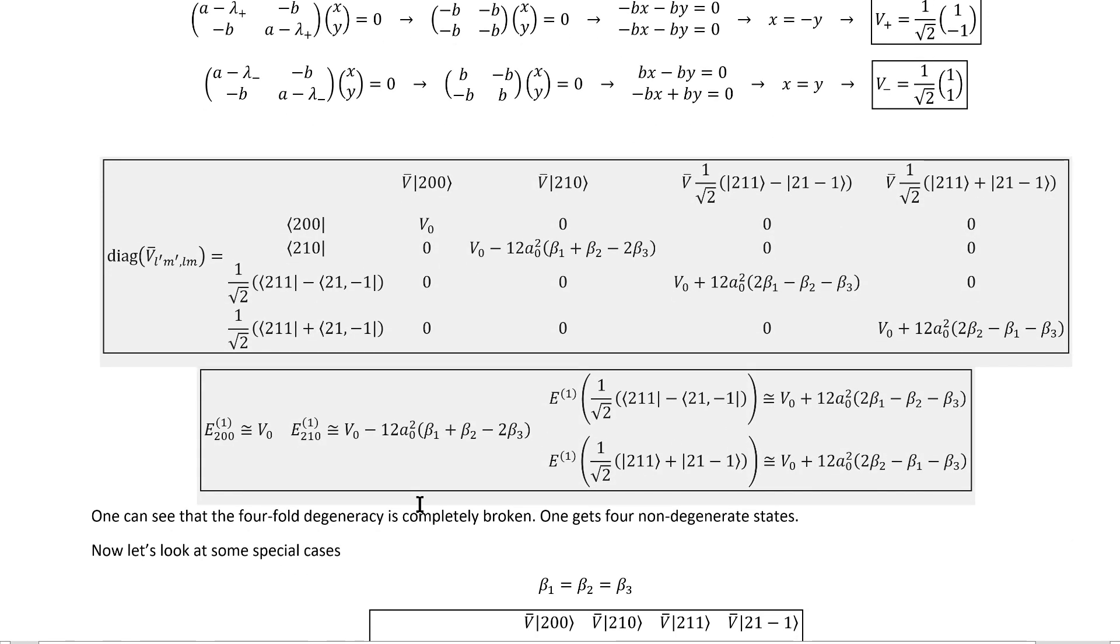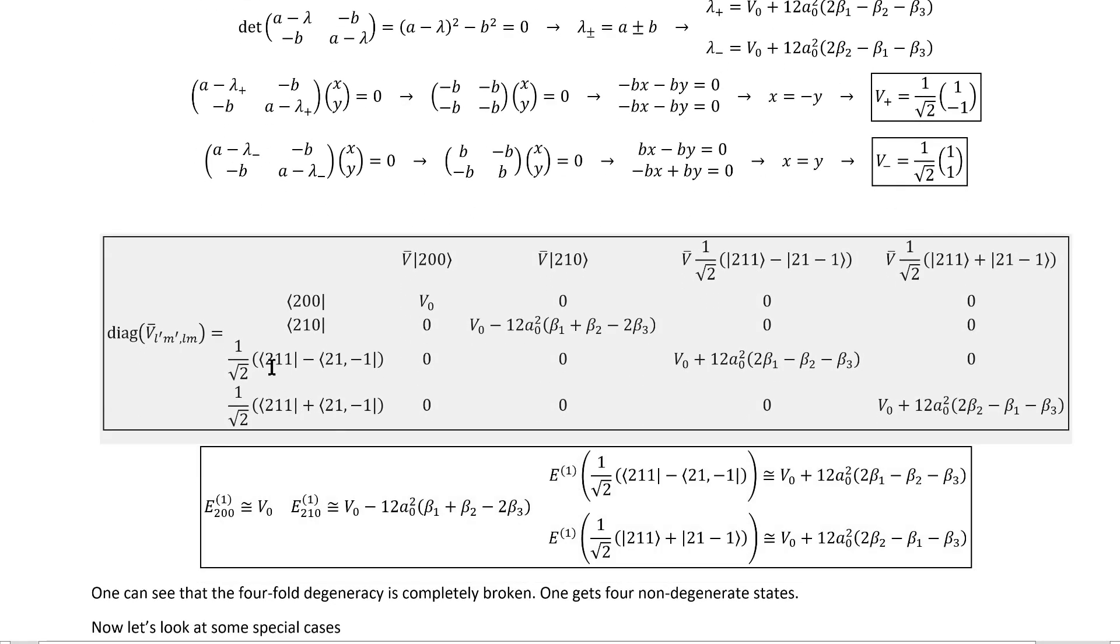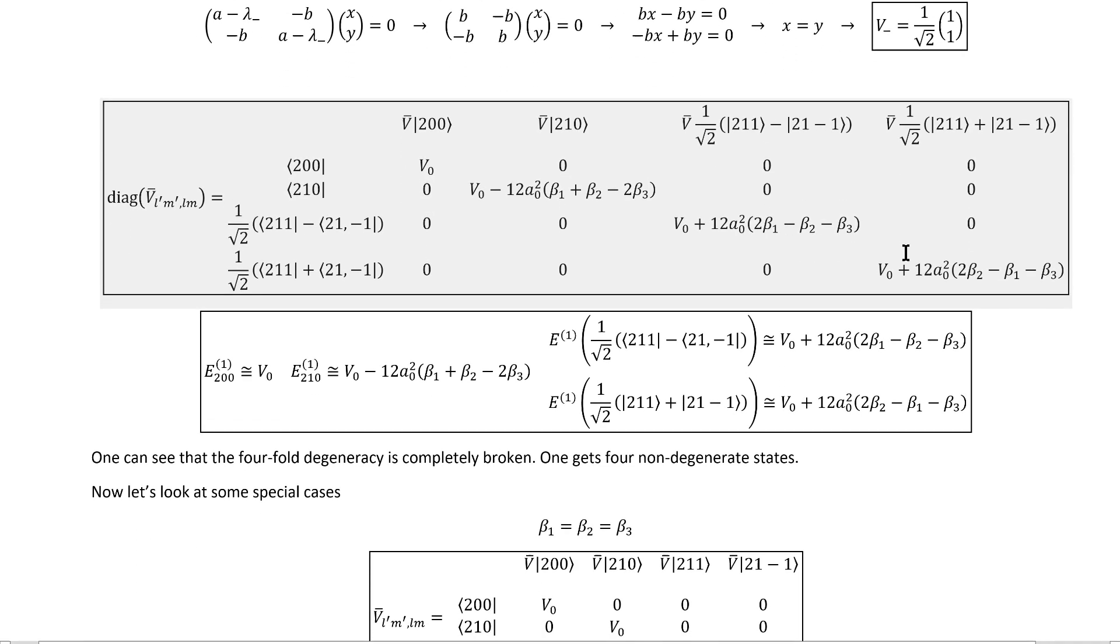One can see from these energy corrections that the fourfold degeneracy is completely broken. One gets four non-degenerate states, and because the original matrix was off-diagonal, some of those non-degenerate states are superpositions of the original basis states.